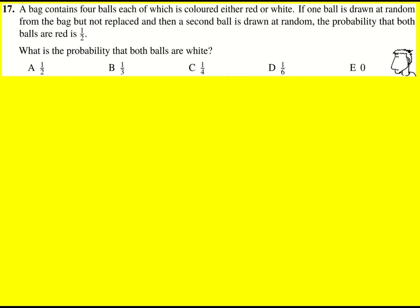The bag contains four balls, each of which is either red or white. If one ball is drawn at random from the bag but not replaced and the second ball is drawn at random, the probability that both balls are red is a half. What's the probability that both balls are white?